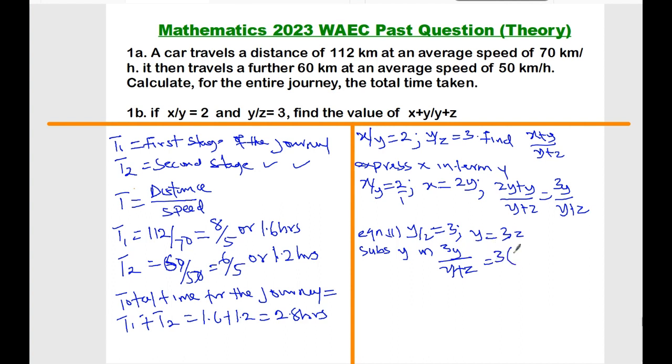Replace y with 3z, so 3y equals... it's supposed to be 3z plus z because we are replacing y with 3z. So the final answer will be 3 times 3z, which is 9z all over 3z plus z, that will be 4z. And the answer will be z cancels through, so you have 9z over 4z, and that's the final answer.